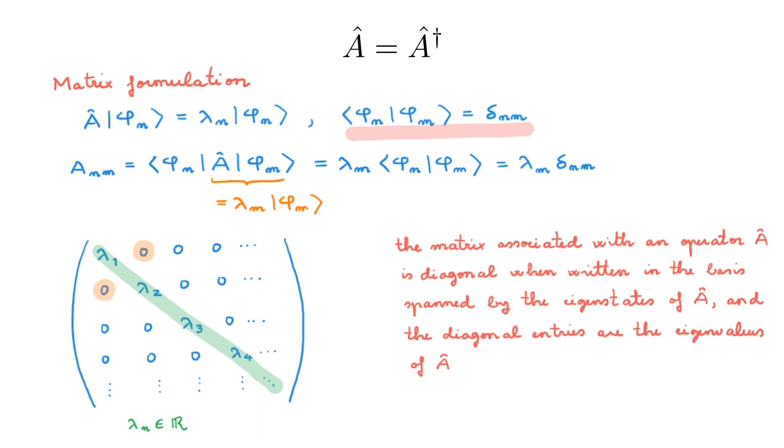This result is something we will encounter time and again in quantum mechanics, so make sure you are comfortable with it. To summarize: Hermitian operators have two essential properties — their eigenvalues are real numbers, and their eigenstates form a basis in state space. Both properties become fundamental when we study measurements in quantum mechanics. If you want to see how this comes about, check out the videos on measurements. If you liked the video or have suggestions for future videos, please subscribe.